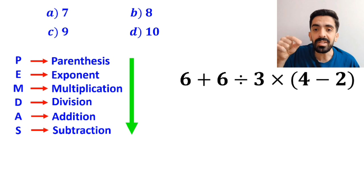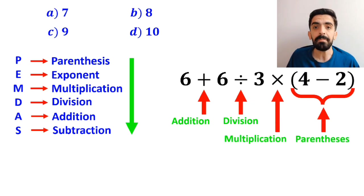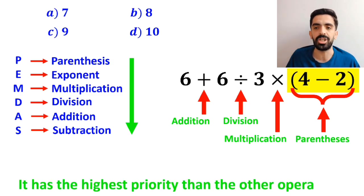As you can see in the image, in this expression, first we have an addition sign, then a division sign, followed by a multiplication, and finally parenthesis. We must start with the parenthesis first, because it has the highest priority than the other operations.